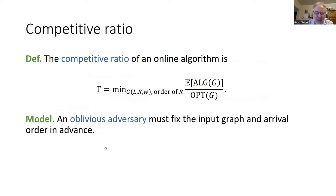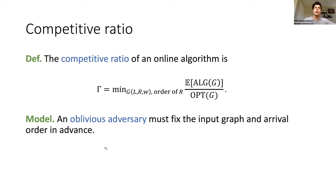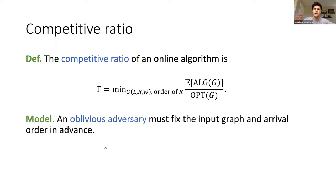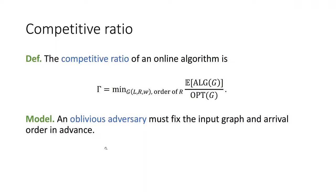A clarifying question: why is the competitive ratio the minimum rather than the maximum? We're fixing the algorithm and trying all different inputs. The competitive ratio captures the worst the algorithm could perform — we consider all instances, and since the ratio is less than one, it is indeed a minimum. We're working from the standard framework of competitiveness in online algorithms.